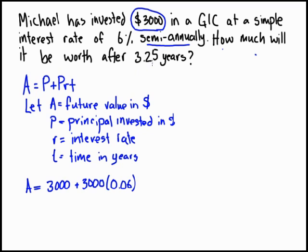That doesn't mean we've gained interest over the full 3.25 years, because we only get interest after every half year. So if this was 3.5 we'd get a full set of interest, but because it's paid out every half year, we only get it after 3 — we took it out a little bit early to get full interest there. So we multiply by 3, not by 3.25.